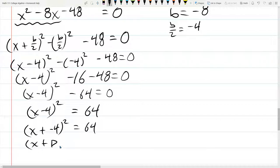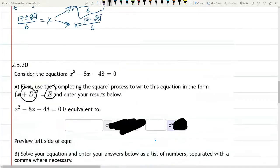So if you really want, you can write x plus negative 4 squared equals 64. And then that's x plus D squared. I think they use capital E on the right side. So capital D is negative 4. Capital E is positive 64. And we see... Oh, I see what they're asking for. That was annoying.